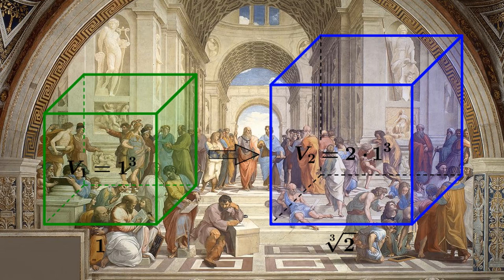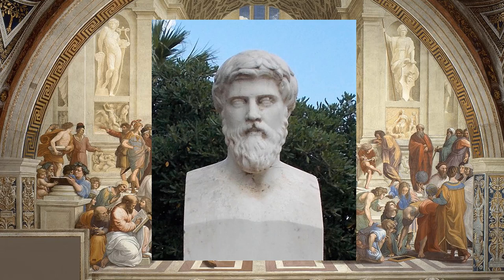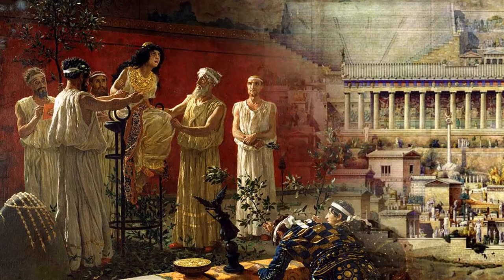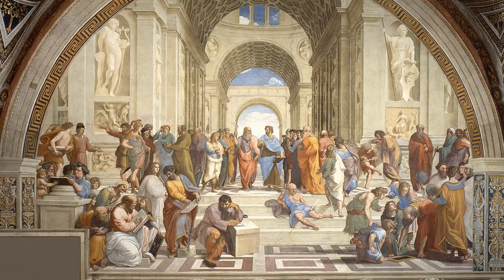The Cube of Delos is another now-proven impossible problem studied by Greek mathematicians. According to Plutarch, a first century AD Neoplatonist and priest of the temple of Apollo, this problem was first proposed by the Oracle of Delphi, who instructed the citizens of Delos to double the size of the cube-shaped altar to Apollo.